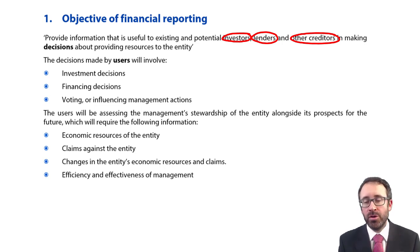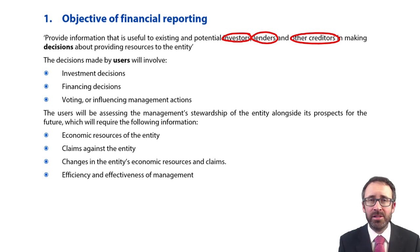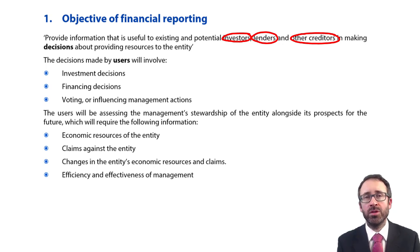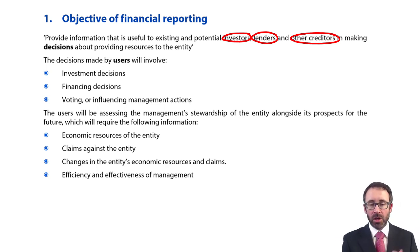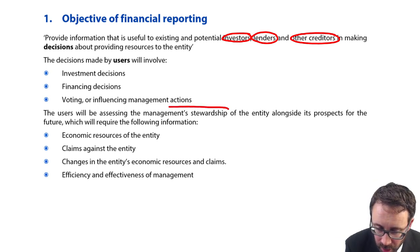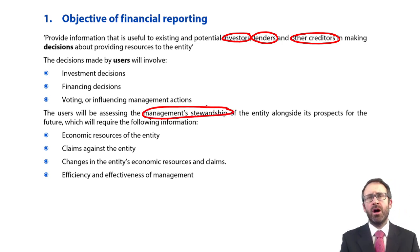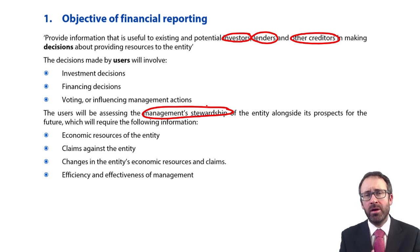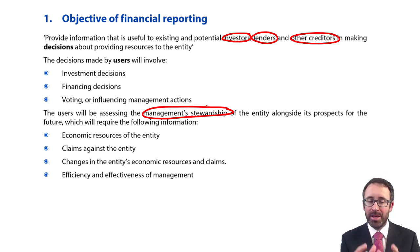We've got these users of the financial statements — your investors, your lenders, your creditors — but they're not running the business. It is the directors that are running the business on behalf of the shareholders, and they should be making decisions to maximise shareholder wealth and to also consider the stakeholders — the lenders and the other creditors. The framework acknowledges that the users are assessing how well management are running the business, bringing in the words 'management stewardship,' which means users need to be able to assess how well that business is being run.